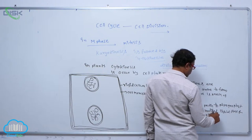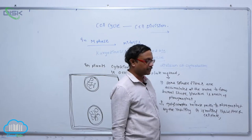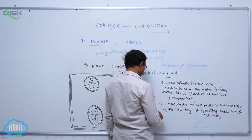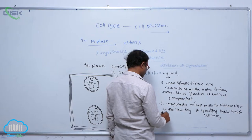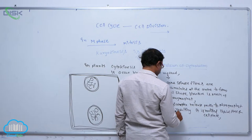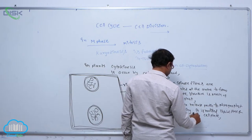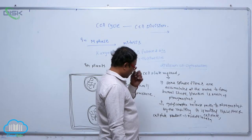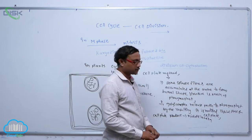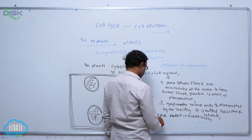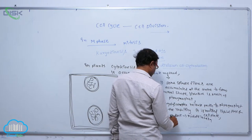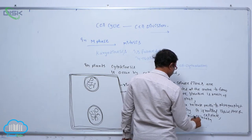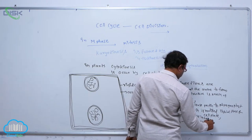After a number of chemical reactions occur in the cell plate, this cell plate is formed at the center. From these chemical reactions, the middle lamella is produced. This middle lamella grows towards the periphery, towards the outside.